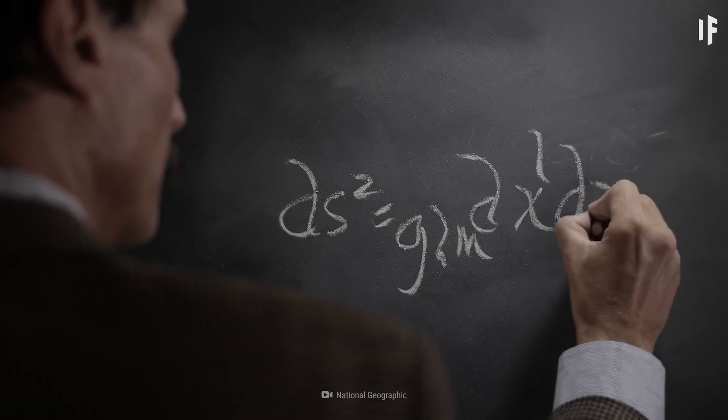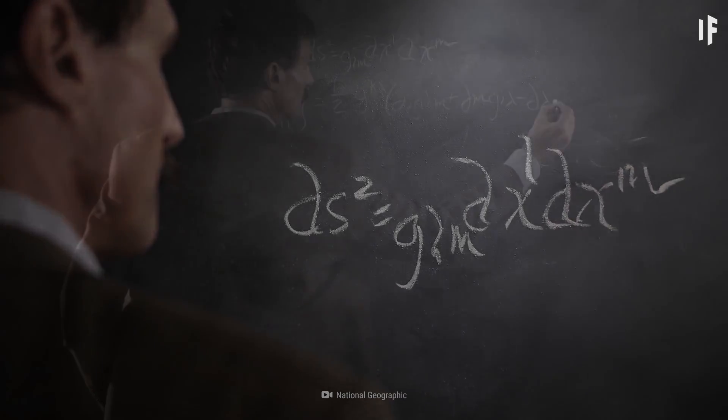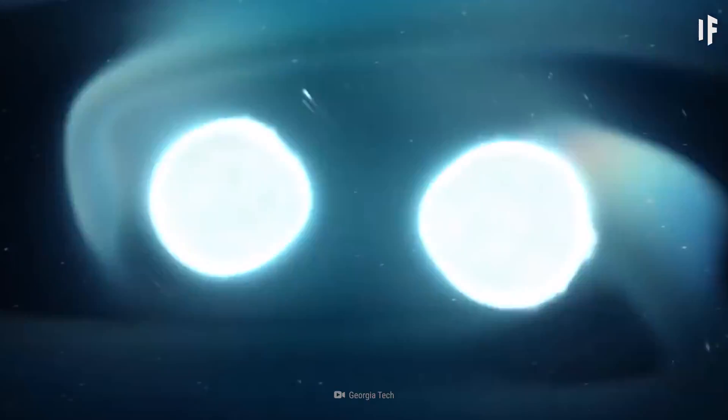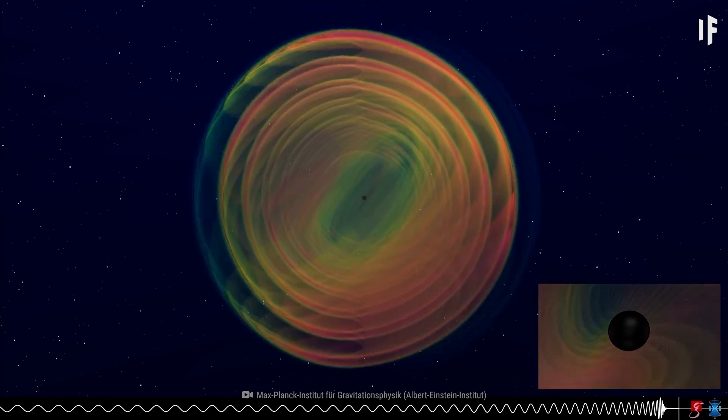With great foresight, Einstein inferred the collision of black holes, or massive stellar objects, create distortions in gravity, which are pushed out in all directions.